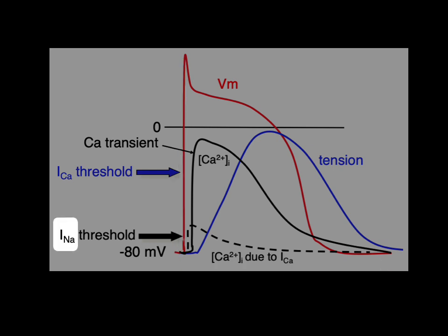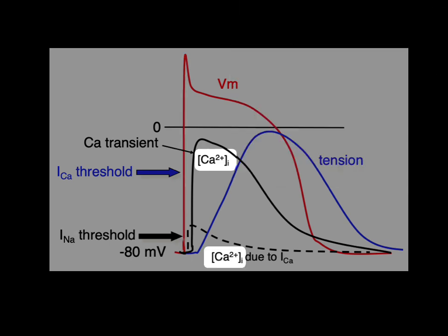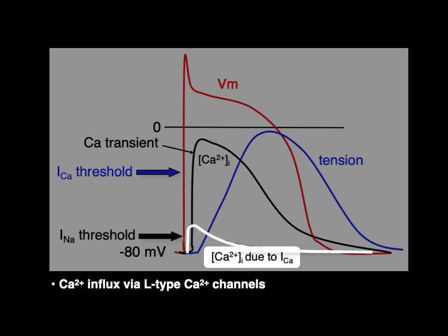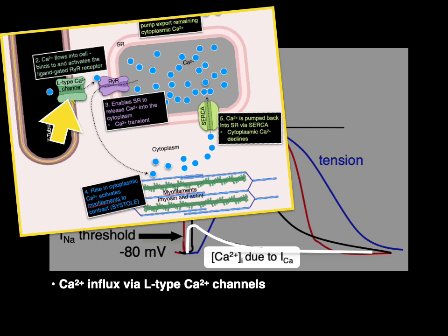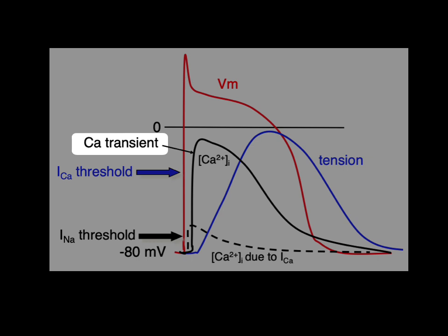So INA is the sodium current. It's that upstroke here, that thing right there if we remember. Then the increase of intracellular calcium, there's two different methods that this occurs. The increase of intracellular calcium due to the calcium current, that's the calcium influx via the L-type calcium channels, that doohickey right there. This rise of intracellular calcium by itself is too small to trigger a contraction. It's the calcium-induced part of the calcium-induced calcium release.